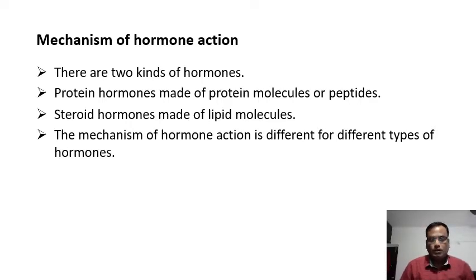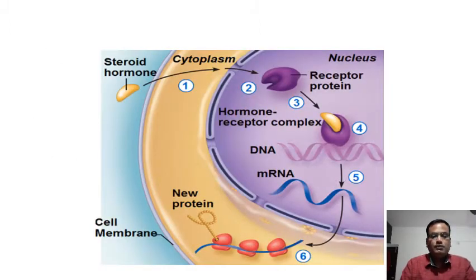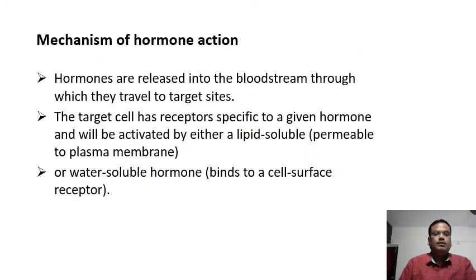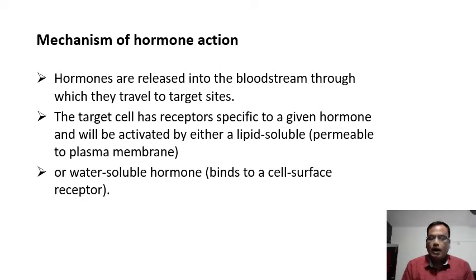The mechanism of hormone action differs for these two types of hormones — for peptide hormones the mechanism of action is different, and for steroid hormones it is different. There is a diagram to show how steroid hormones work, which we will study in detail in a later session. Hormones are chemical messengers and they are released directly into the bloodstream, and every hormone has a target organ.